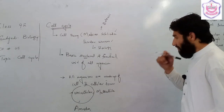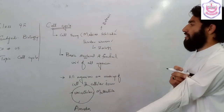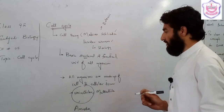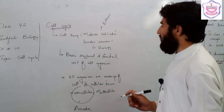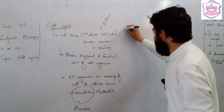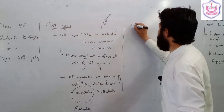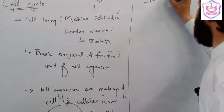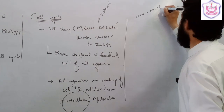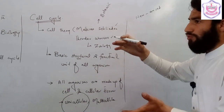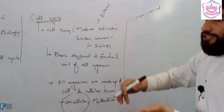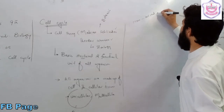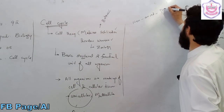The third point of cell theory is that new cells arise from pre-existing cells. That means new cells arise from pre-existing cells.